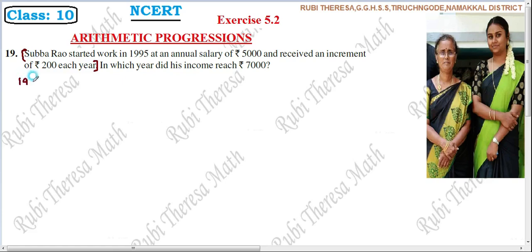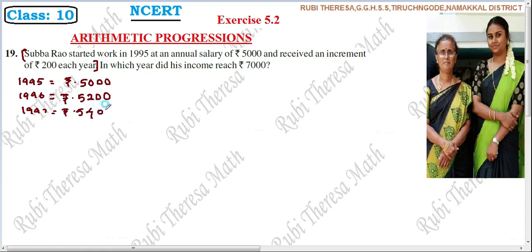He started his work in 1995. In 1995, he received Rs. 5000 — this is the first year. In 1996, the second year, he receives a Rs. 200 increment, so 5000 plus 200 equals Rs. 5200. Then in 1997, Rs. 5400. Every year, the previous year's salary plus 200.